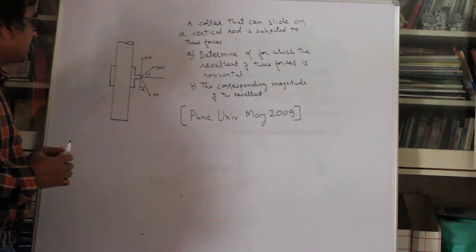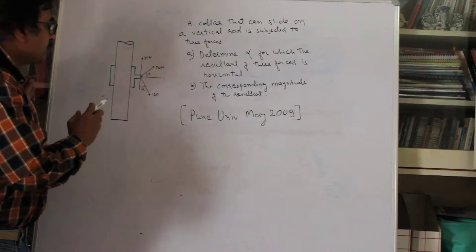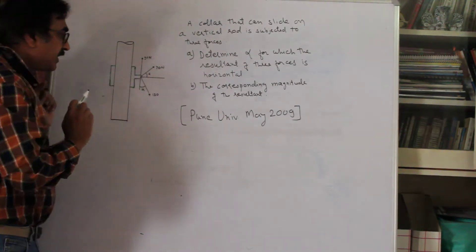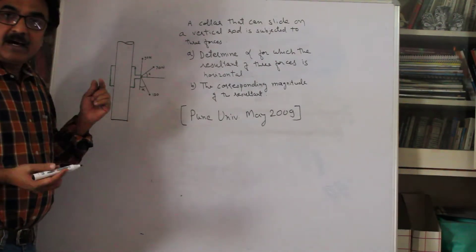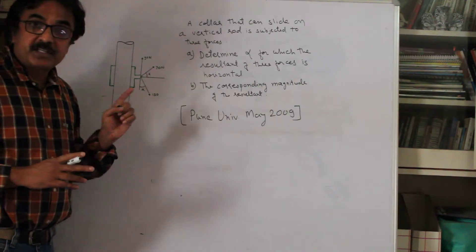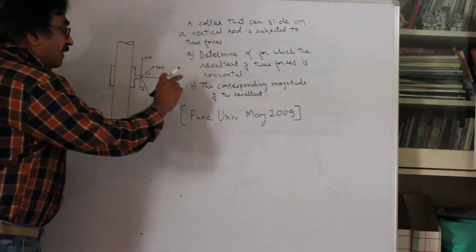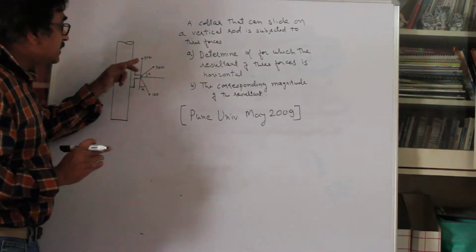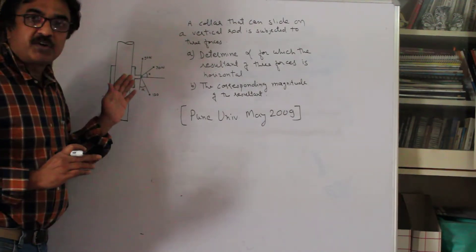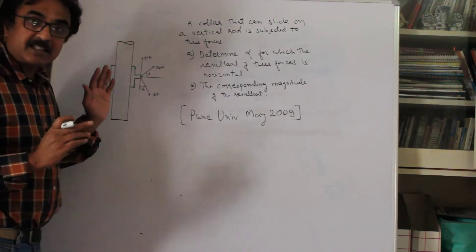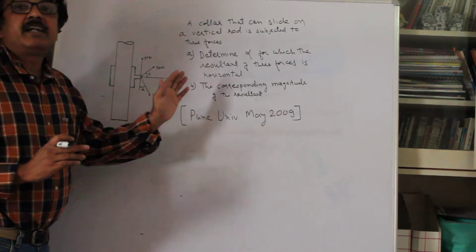This is a collar which can slide up and down, and you have forces one, two, and three. We can treat these forces as passing through a single point, so they are coplanar concurrent forces. You are told the resultant is horizontal — meaning there is no vertical component of the combined forces. So we know that if we resolve all three forces vertically, they must sum to zero.